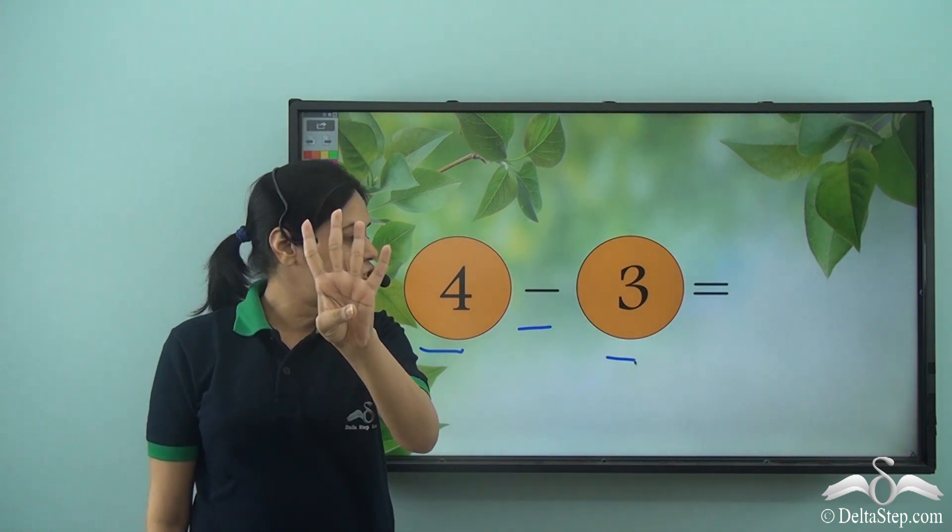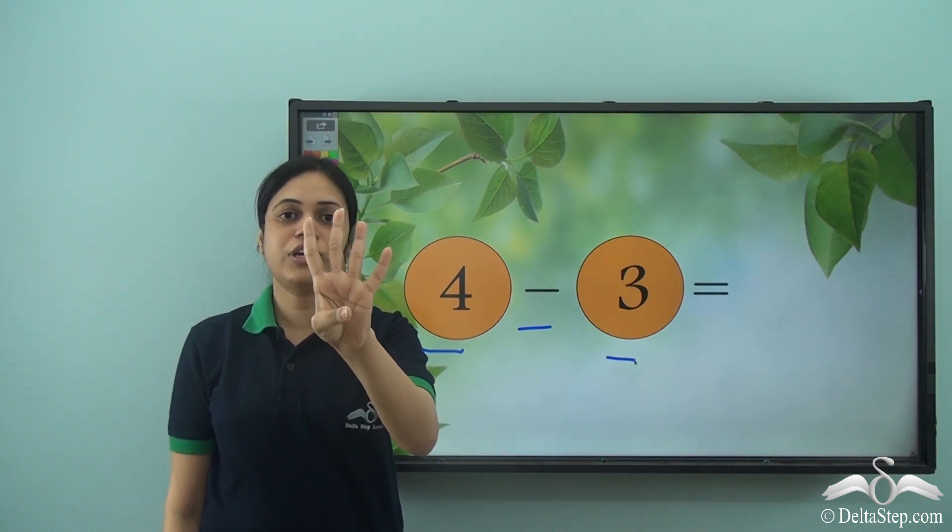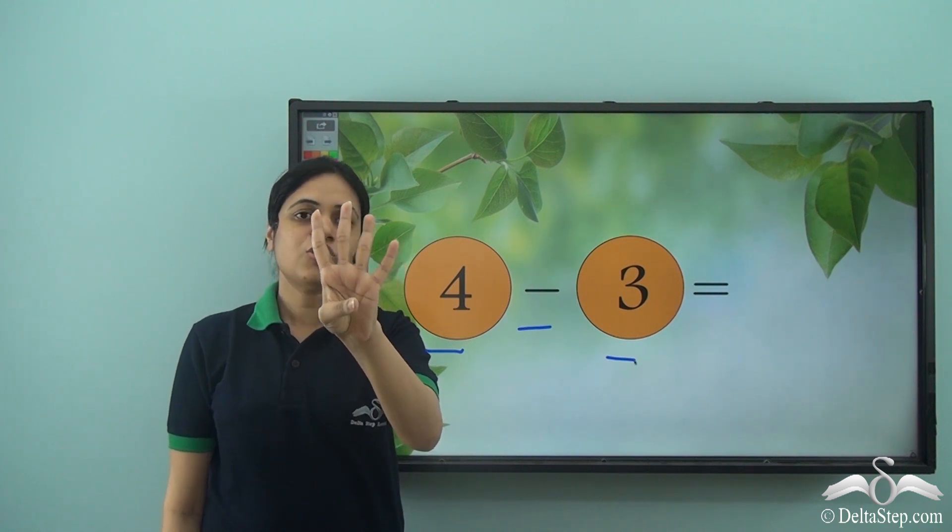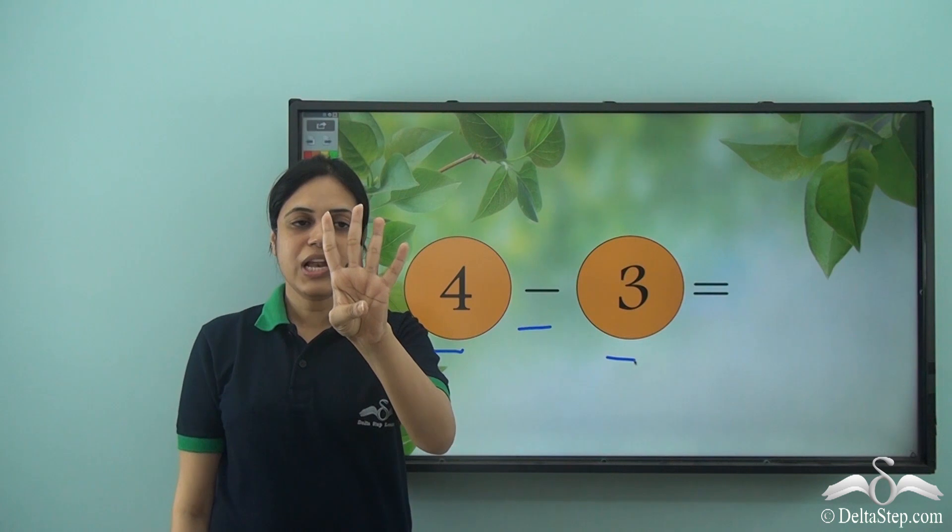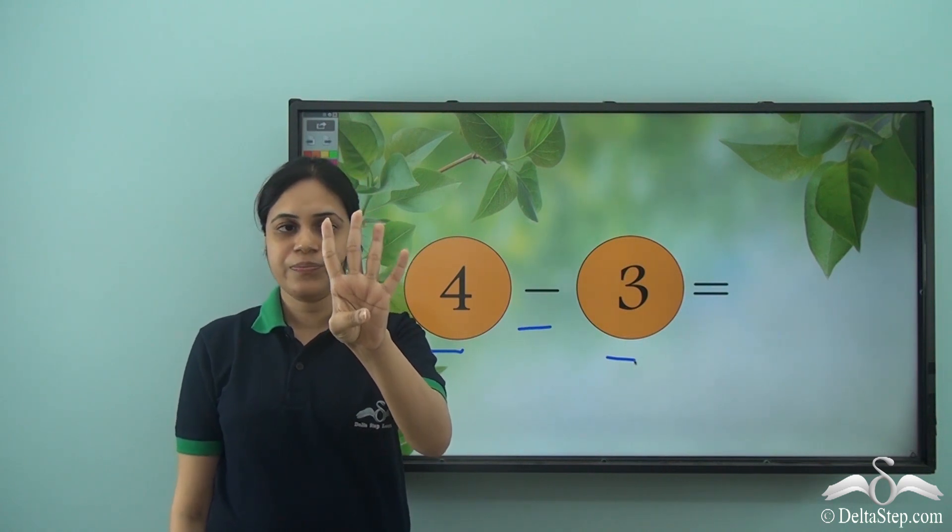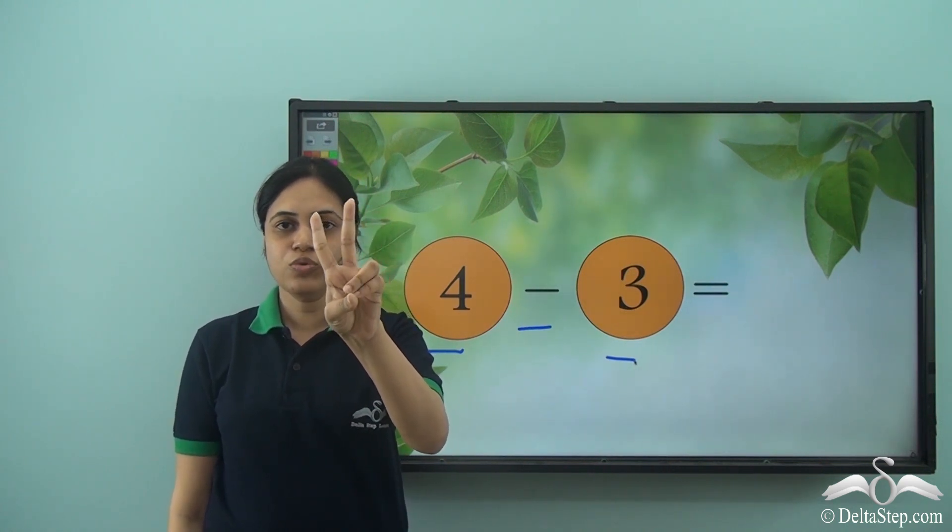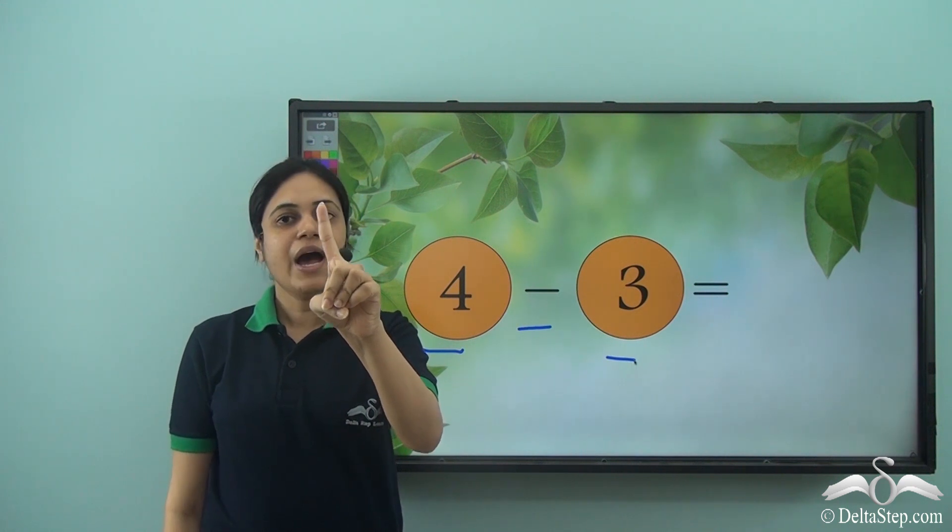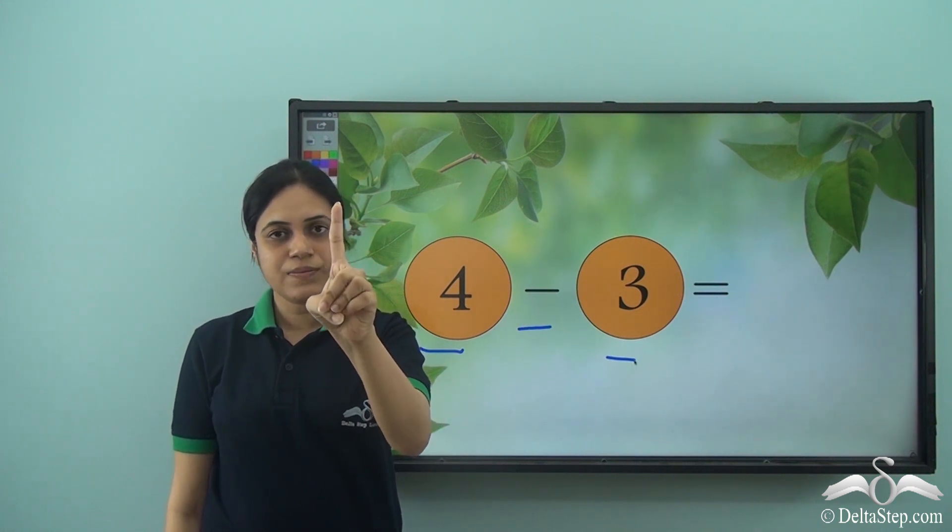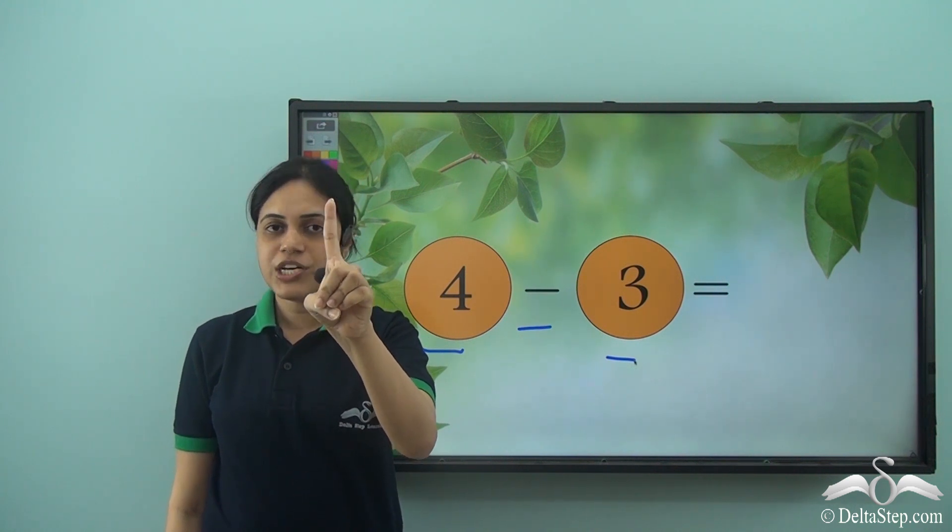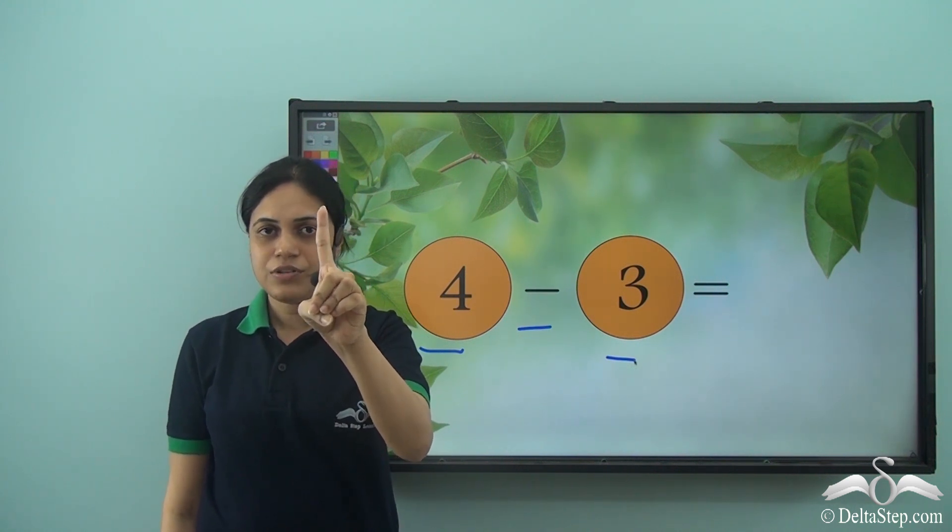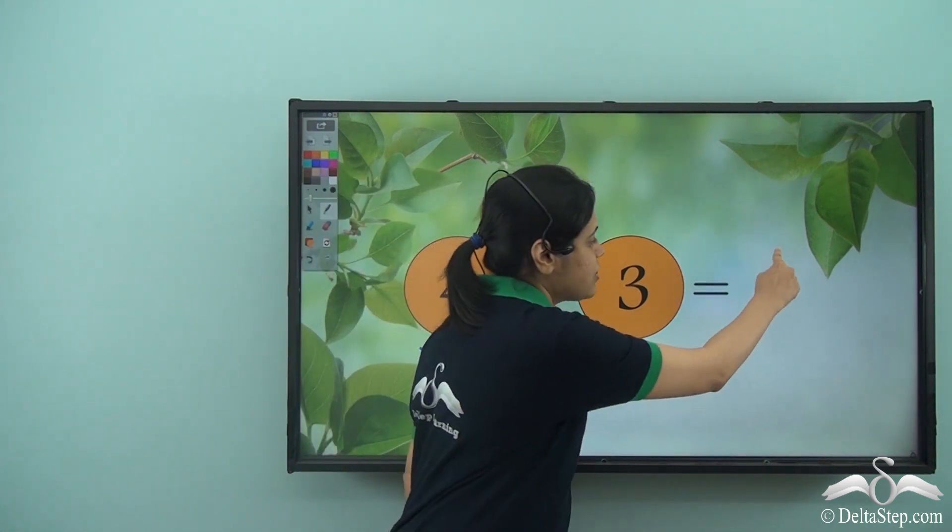Now I need to subtract three or take away three. So I will take away or remove three fingers. So let me remove three fingers. One, two, three. I have removed three fingers. Now how many fingers are left? Just one finger. So the answer is one.